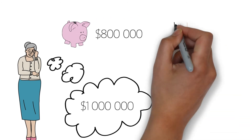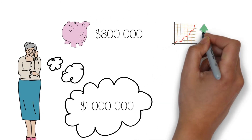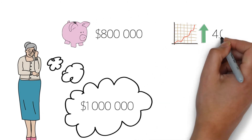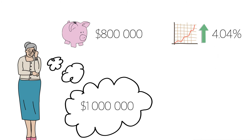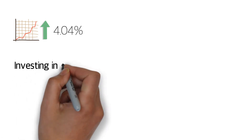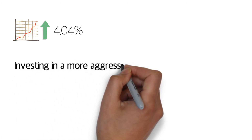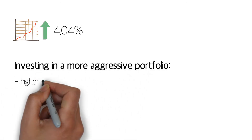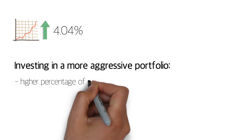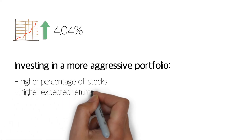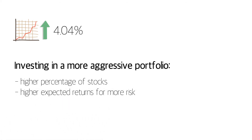Recall that Sarah was setting her savings aside in a risk-free asset that yields 4.04% per year. If she wants to maintain her target spending level in retirement, she will need to consider taking on some investment risk in order to achieve a higher level of expected return. This can be done by investing in a more aggressive portfolio, which is a portfolio with a higher percentage of stocks.